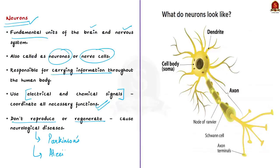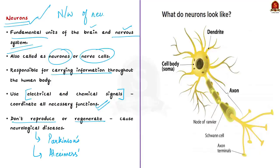The nervous system detects what is going on around us and inside us, and based on this detection, it decides how we should act. It also alters the state of internal organs and allows us to think and remember what is going on. For example, if you are in a terrifying situation, our heart rate increases, and this is done by the nervous system. To do this, the nervous system relies on a sophisticated network called neurons.